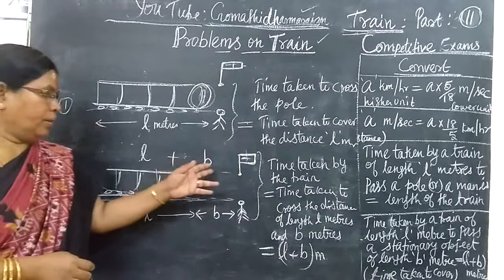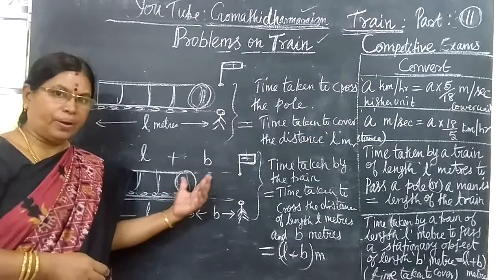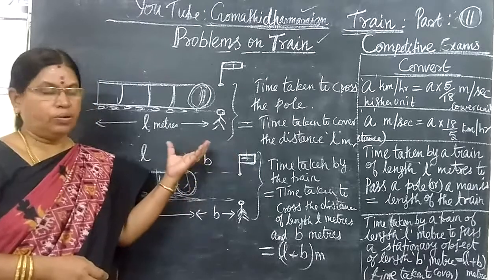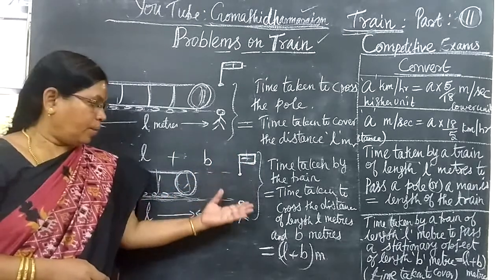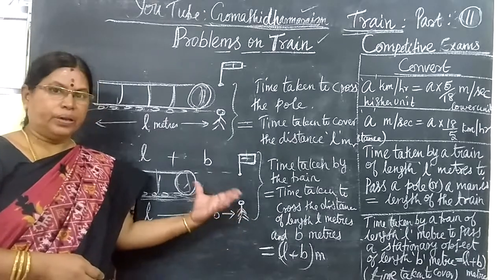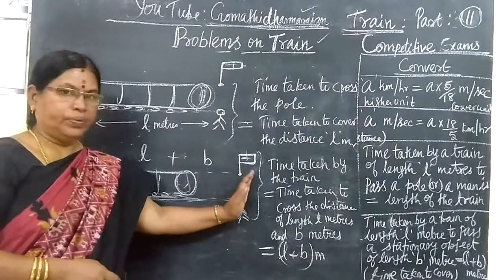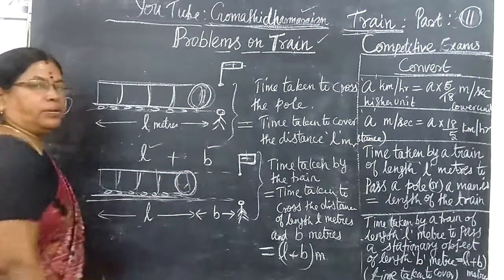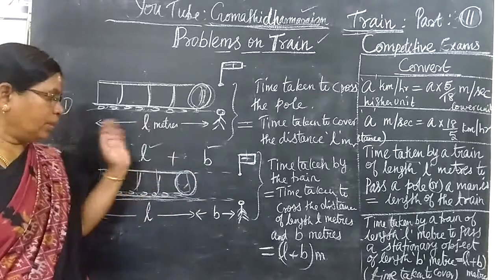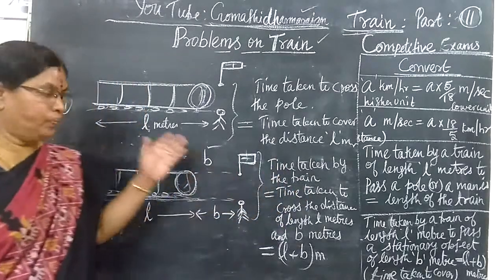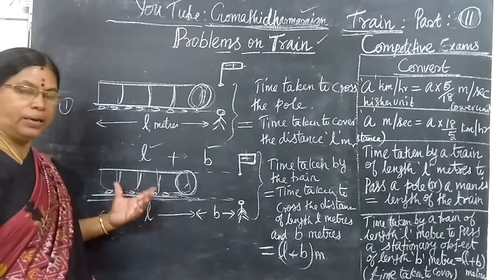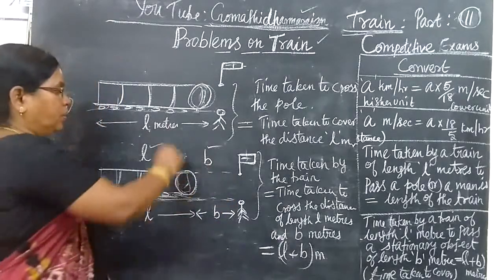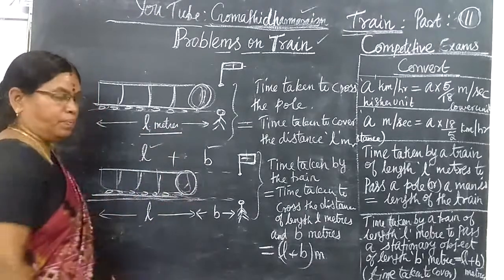Suppose you are given a flag that is at a distance of B meters from the train. The flag, or a stationary object like a man, stands at a distance of B meters. When the train crosses it completely, you add the two distances. The train has to travel L plus B meters. So the time taken to cross the flag completely equals the time taken by the train to cover L plus B meters.